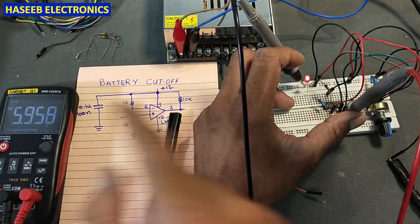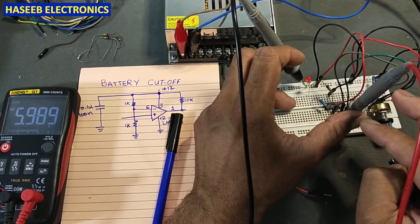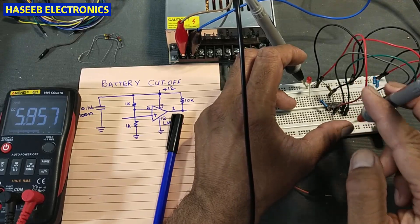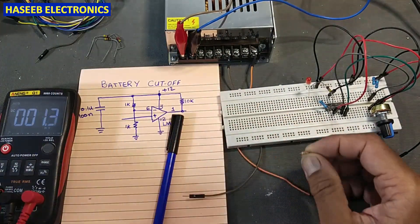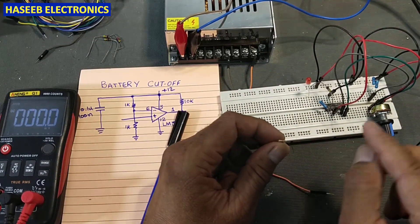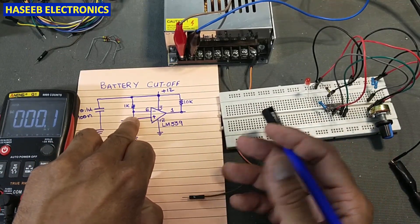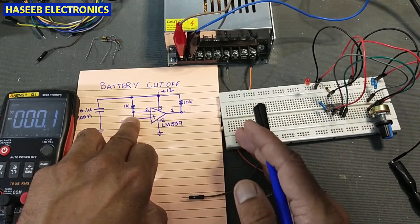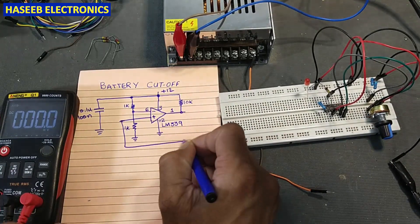Now we will monitor the condition and watch the output LED on the multimeter. When both inputs are approximately near similar values, the comparator will go into an oscillating state. To prevent this, we need to force it to make a good decision. The offset voltage can be 2mV, 5mV, or 20mV — it differs from one IC to another. We need a 1MΩ resistor for high gain between pin number 7 and the output pin.